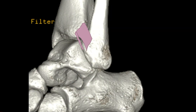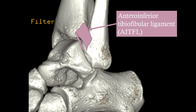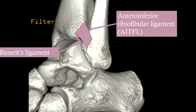The syndesmosis of the distal tibiofibular joint consists of three different parts: an anterior one, a posterior one, and a middle one. Starting with the anterior one: we have the anterior inferior tibiofibular ligament, abbreviated AITFL — not to be confused with ATFL, which is the anterior talofibular ligament. Sometimes there is a thicker ligament more distally, and this is known as Bassett's ligament.